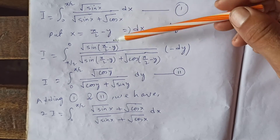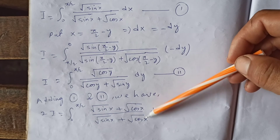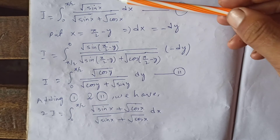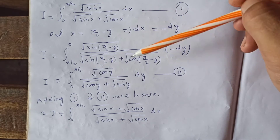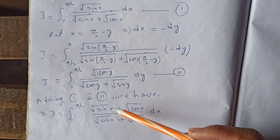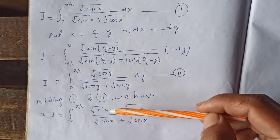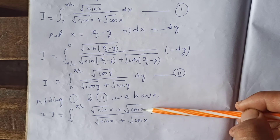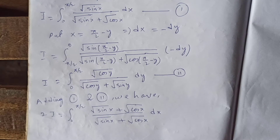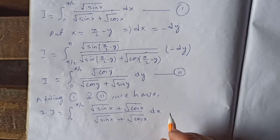Here the denominators are the same, and in the numerator we get √(sin x) + √(cos x) after adding equations 1 and 2. Since numerator and denominator are the same, they cancel out. So 2I equals the integral from 0 to π/2 of 1 dx.